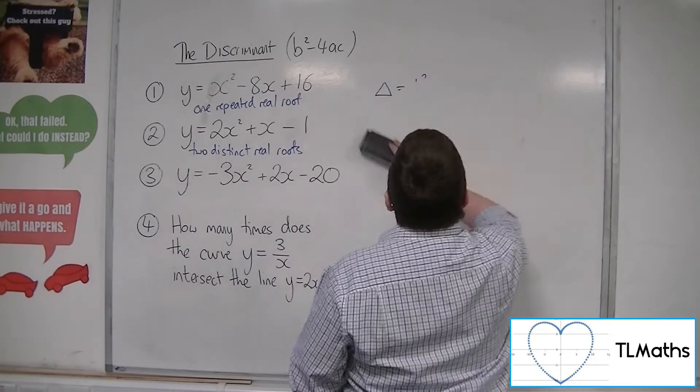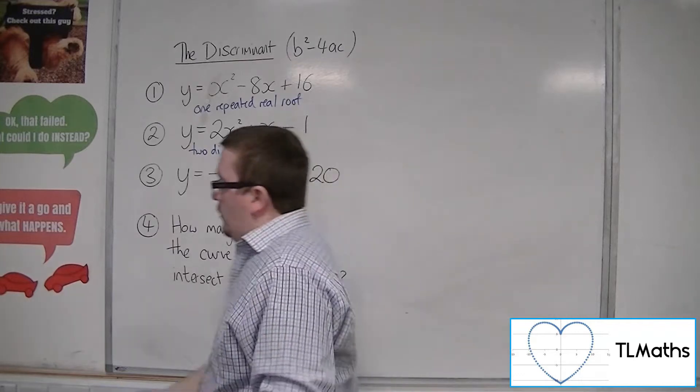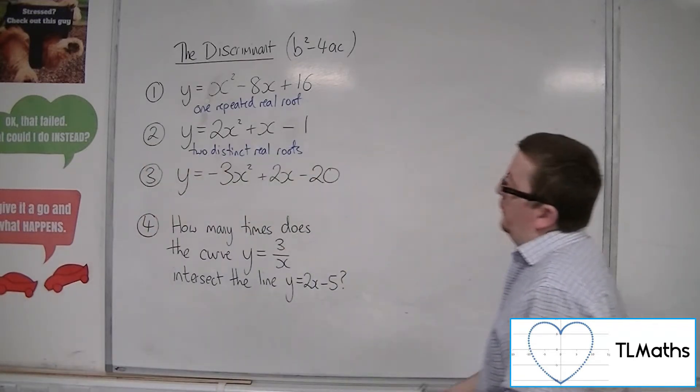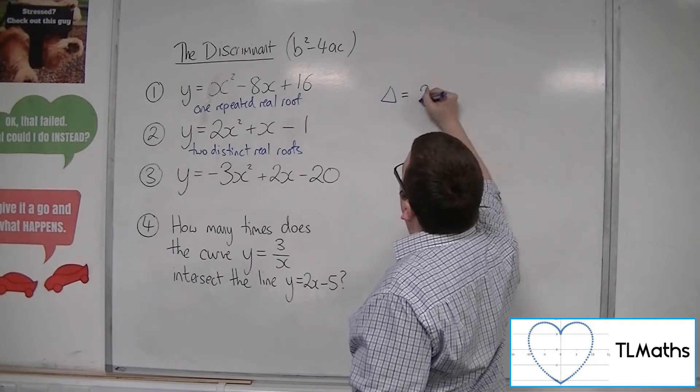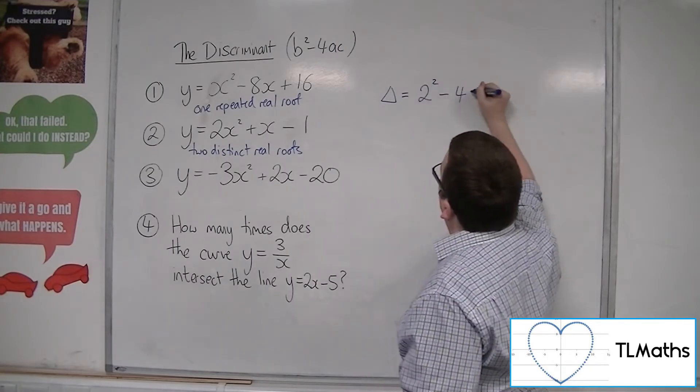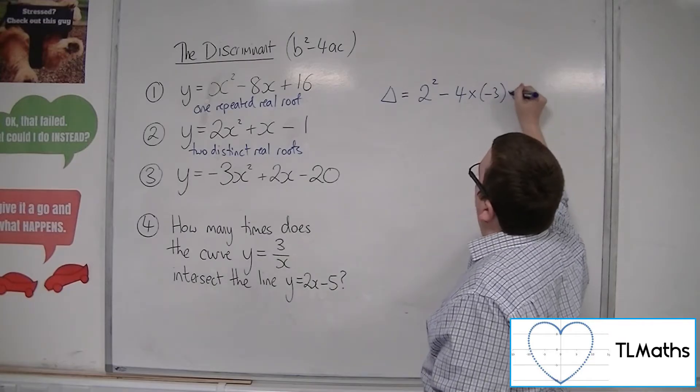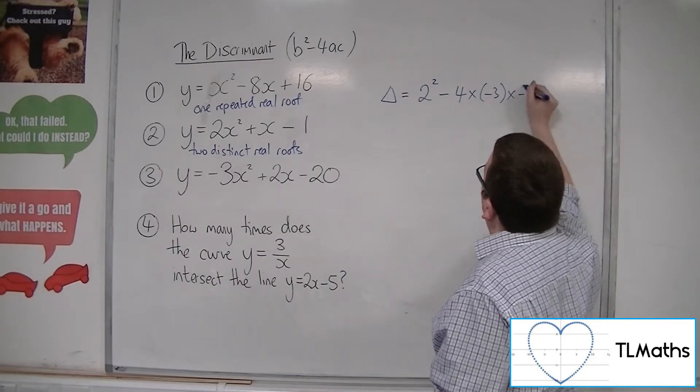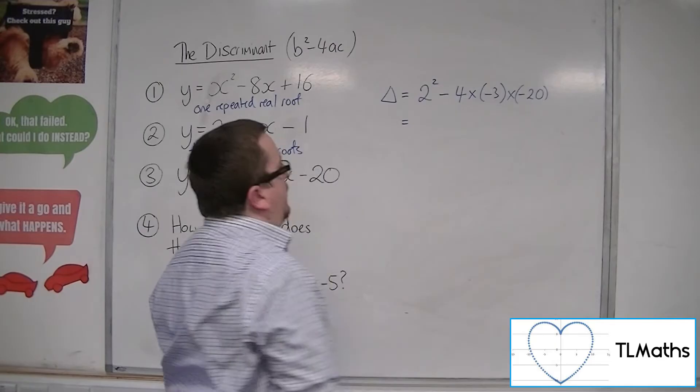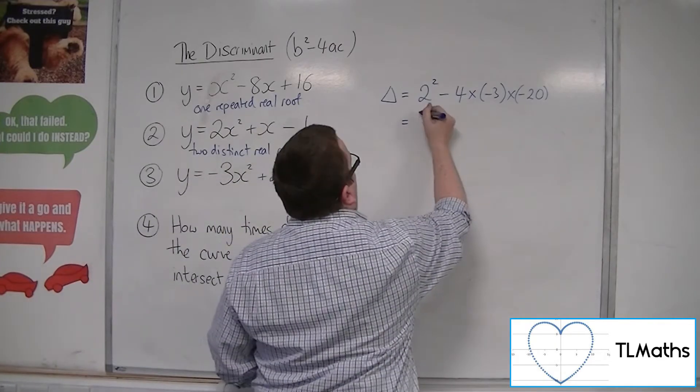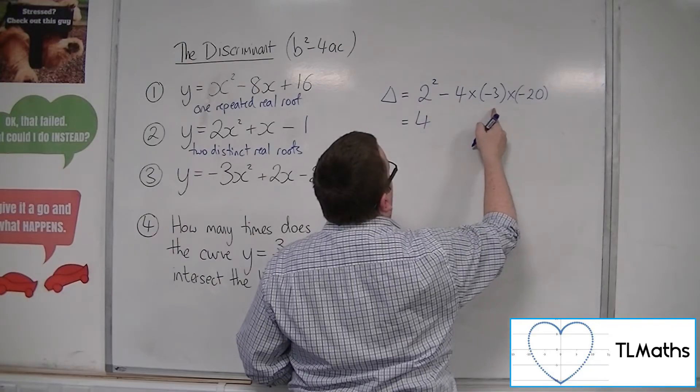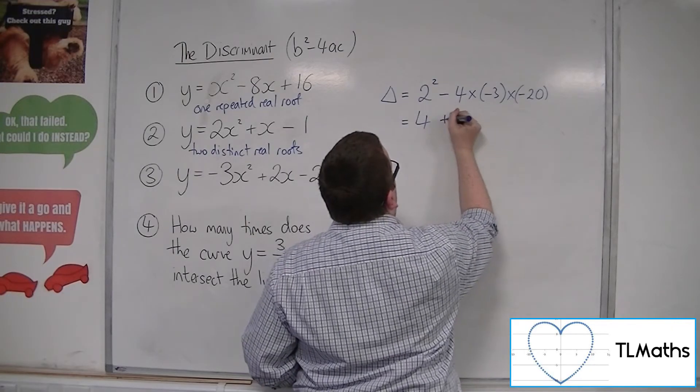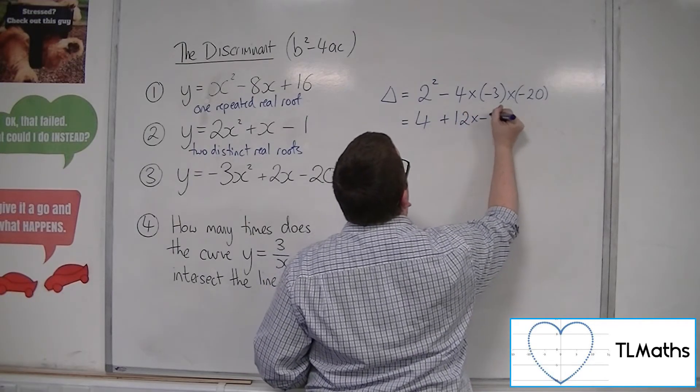So now if we have a look at the third one, y is equal to minus 3x squared plus 2x minus 20, the discriminant is b squared minus 4 times a times c. Notice how I'm using brackets for the negative numbers. So 2 squared is 4, and then we've got minus 4 times minus 3, so plus 12 times minus 20.